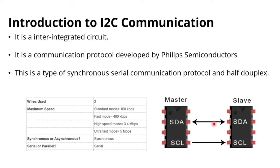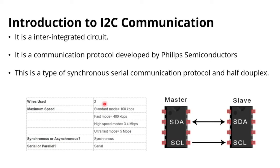I2C is half-duplex because we can only send data from master to slave or slave to master at one time. In contrast, SPI is full duplex because it has separate data lines for master-to-slave and slave-to-master, using four wires. I2C uses only two wires. I2C supports four operating modes: standard mode at 100 kbps, fast mode at 400 kbps, high-speed mode at 3.4 Mbps, and ultra-fast mode at 5 Mbps.